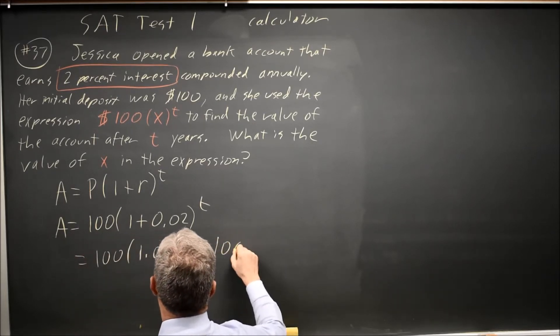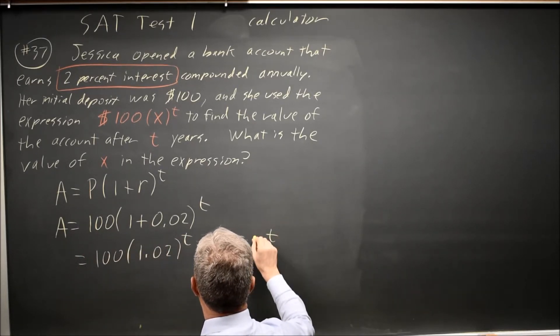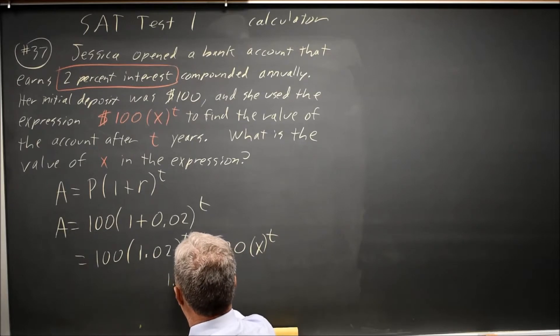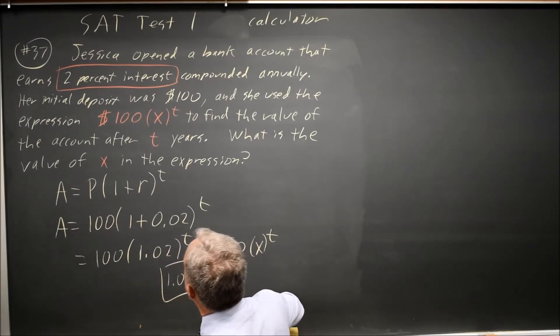And that's equal to 100 times x to the t, which tells us 1.02 is equal to x. So I would grid in 1.02.